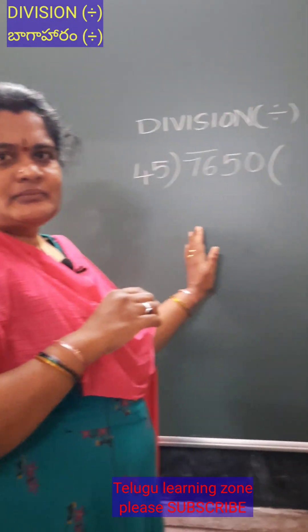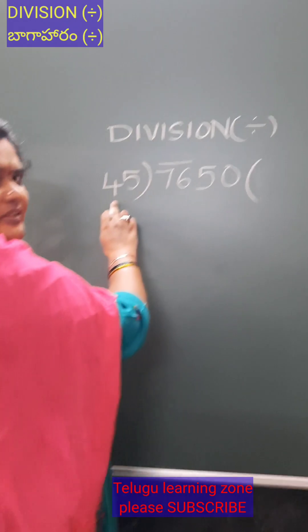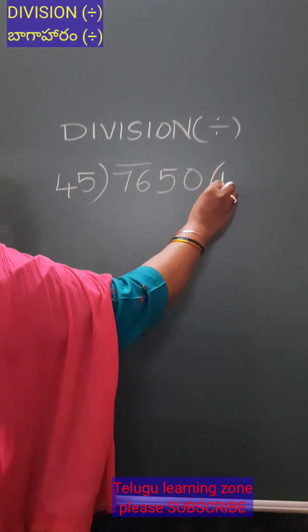In a division, we start from the left side. Here we have 45. 45 ones are 45.